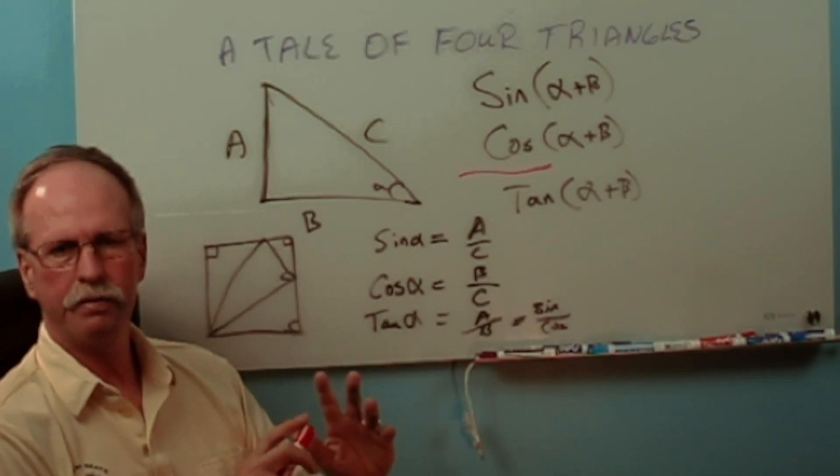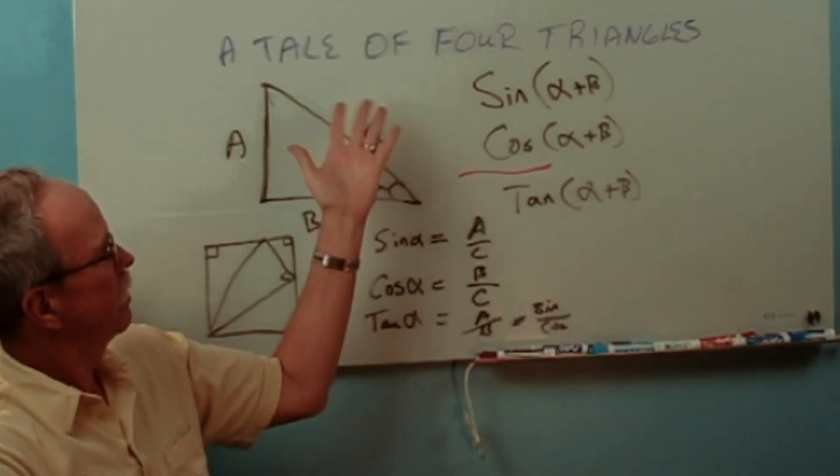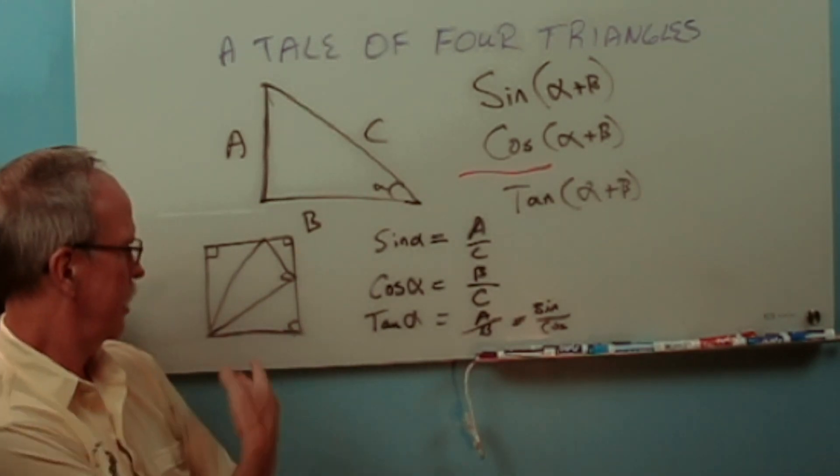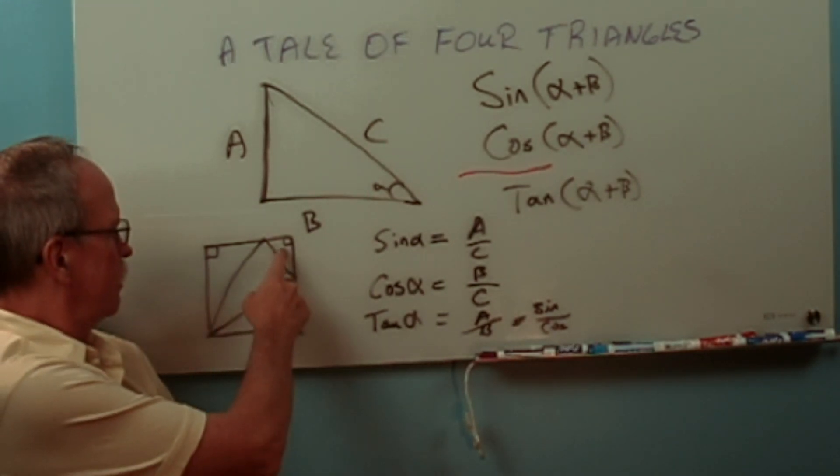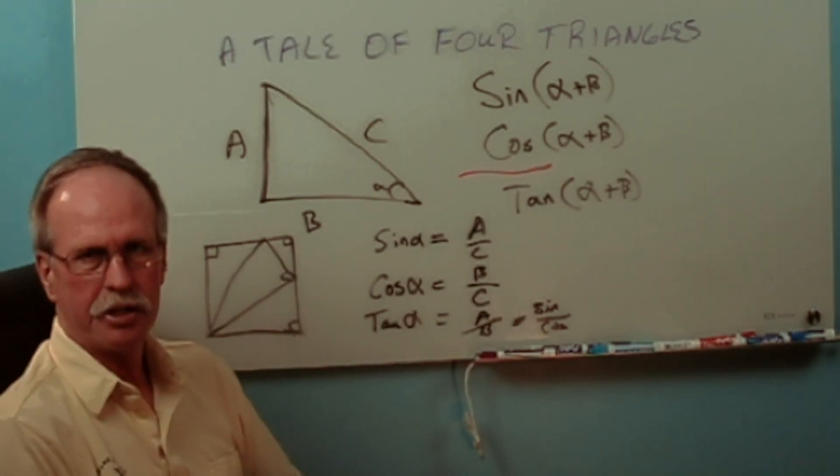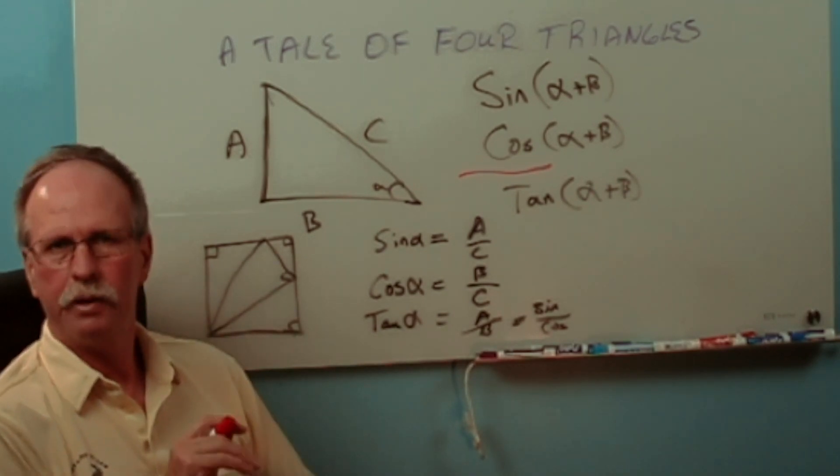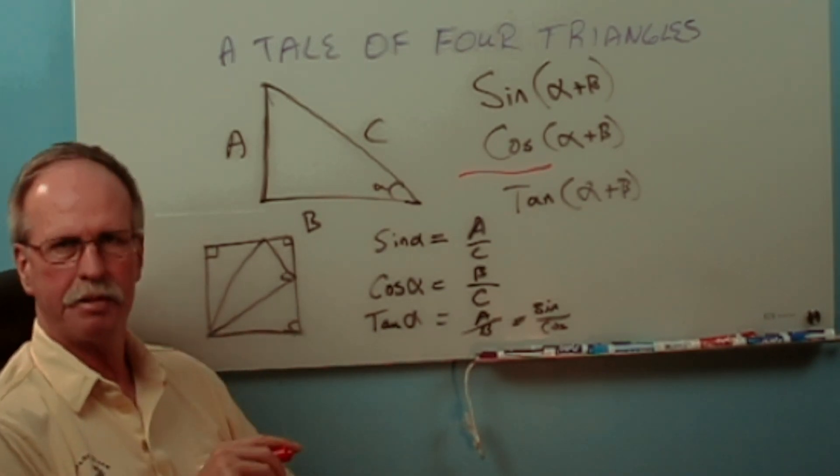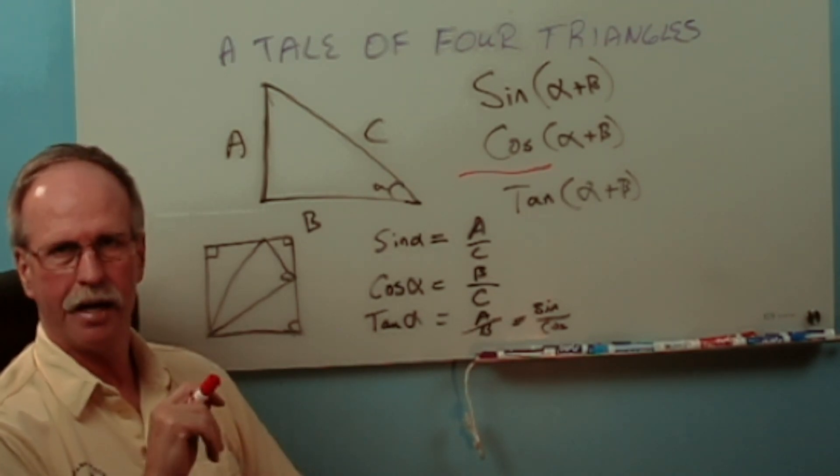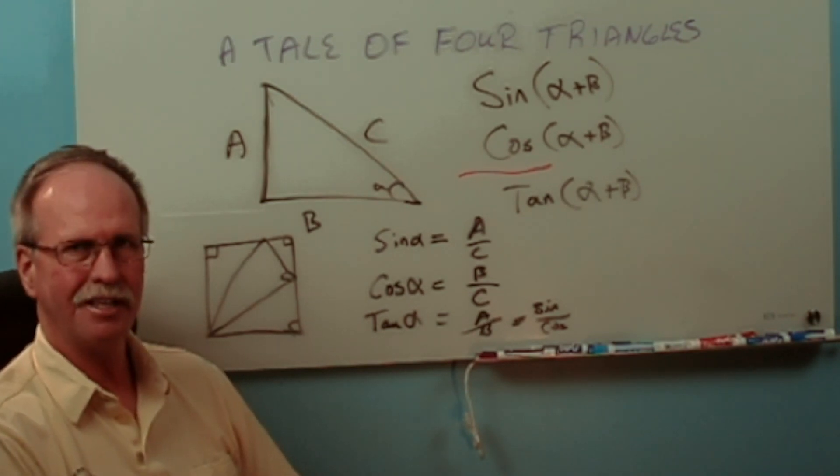But this is a beautiful proof and it involves the tale of four triangles. And here they are. One, two, three, four. So today we're going to do the full Monty. We're going to do algebra. We're going to do trigonometry and we're going to do geometry. So let's cue up the music and get going.